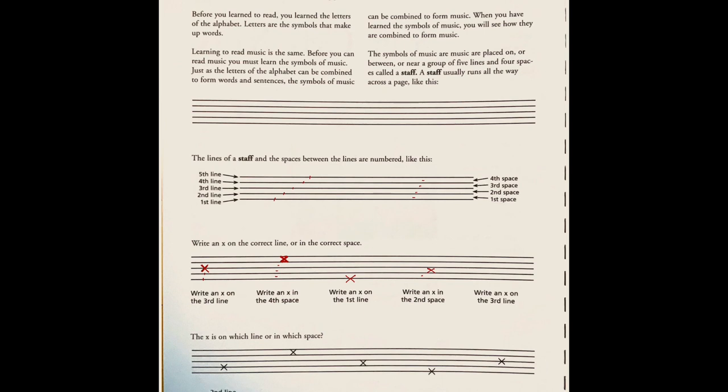And then we'll fill that out all the way. Write an X on the third line. One, two, and three. The X is on which line or in which space. Obviously, this would be second line. Right. And this would be the fourth space. Okay.